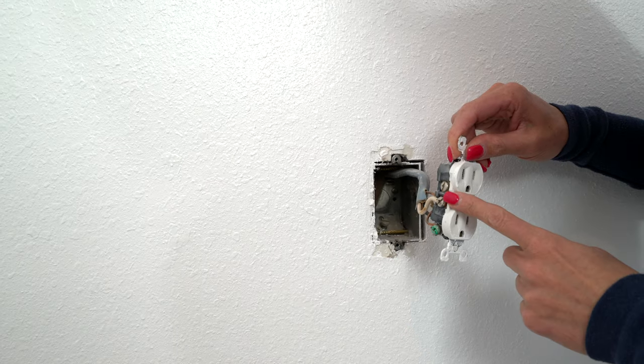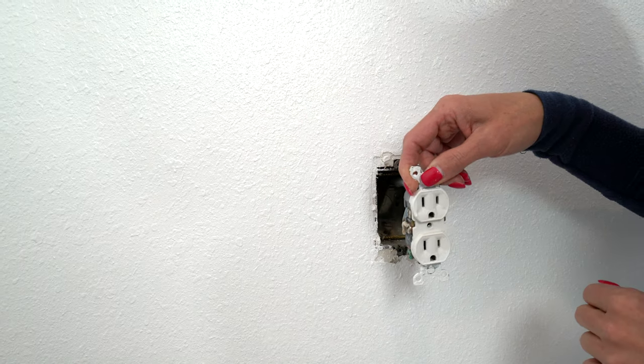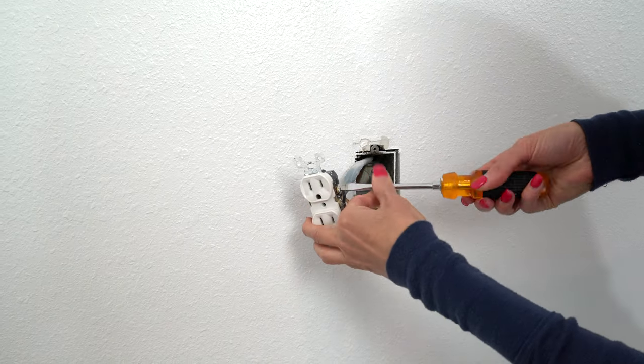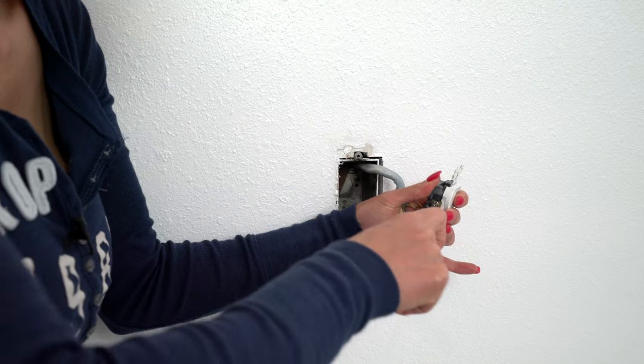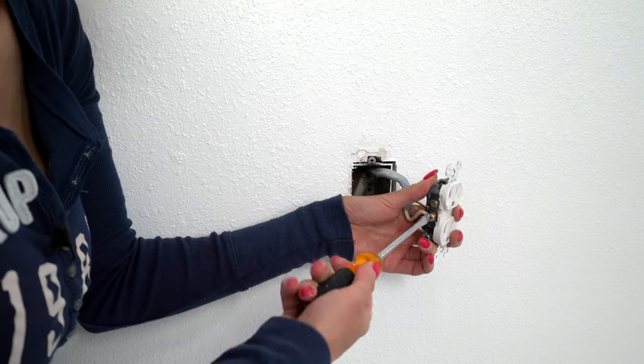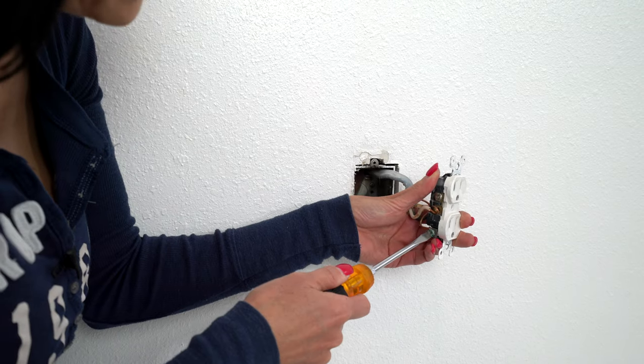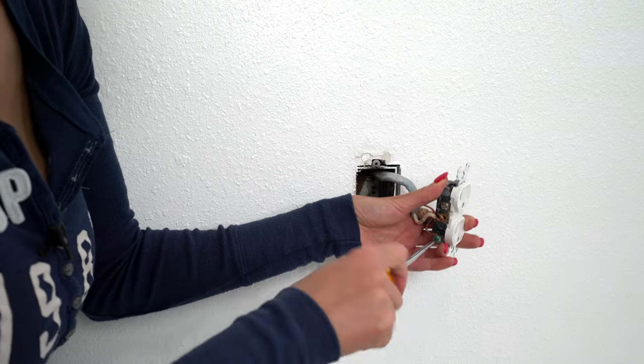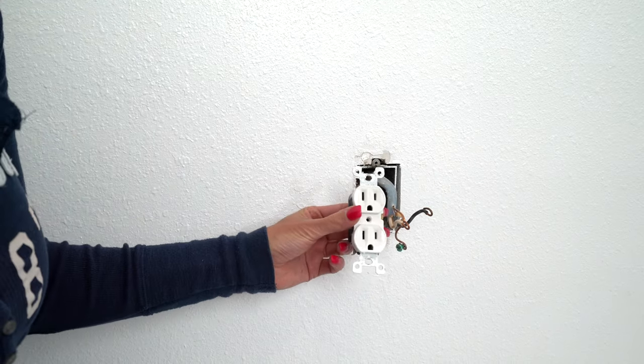Okay. We have three wires: a neutral, a ground, and a hot, and we're going to take them all off. Now we're taking the neutral off and the ground. Okay, we got the old one off.